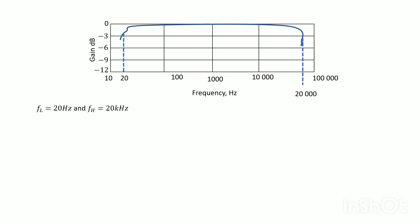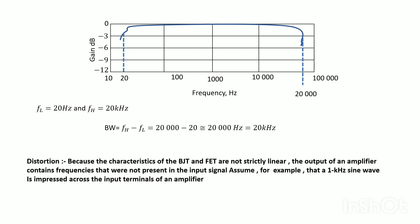Distortion: because the characteristics of the BJT and FET are not strictly linear, the output of an amplifier contains frequencies that were not present in the input signal. Assume, for example, a 1 kHz sine wave is impressed across the input terminals of an amplifier. BJT is bipolar junction transistor, and FET is field effect transistor.